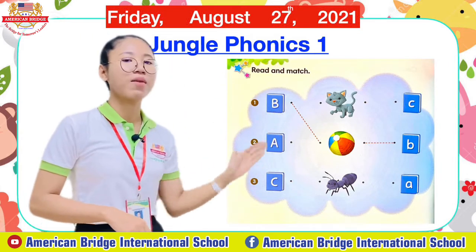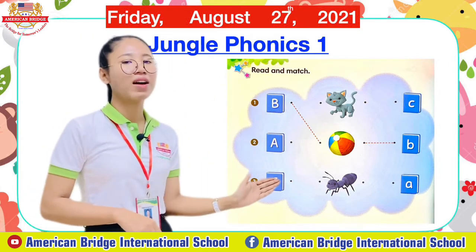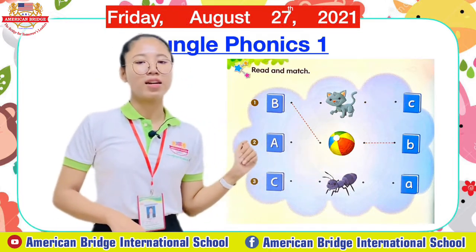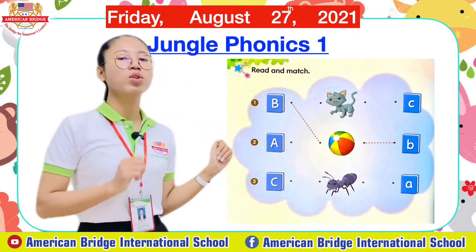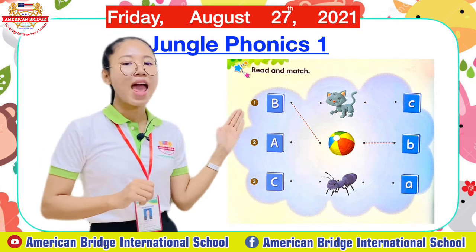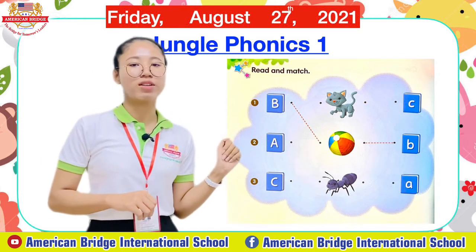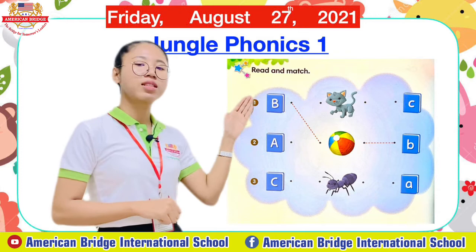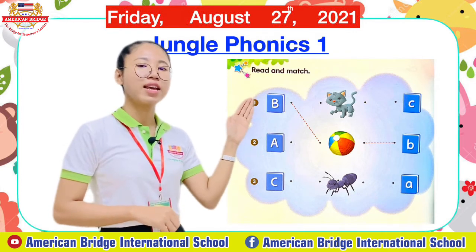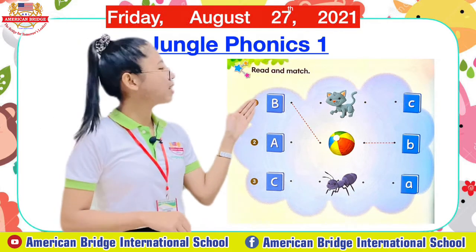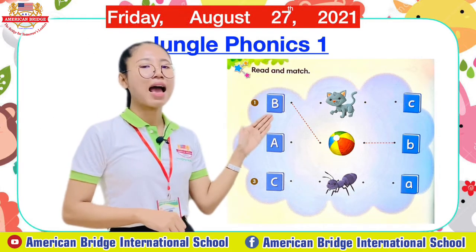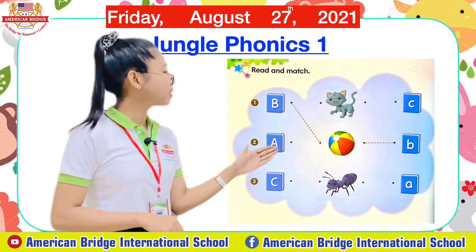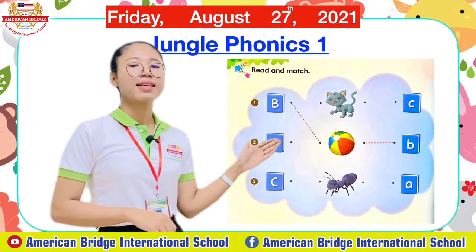Here are all of our sounds, the pictures, and the small letters. We need to read and then match to the correct picture. Tell teacher what is the first sound here — what is this sound? What about the second sound? And what about the last one?